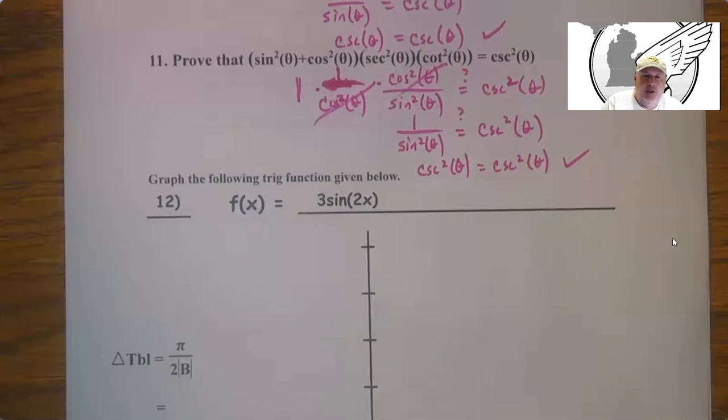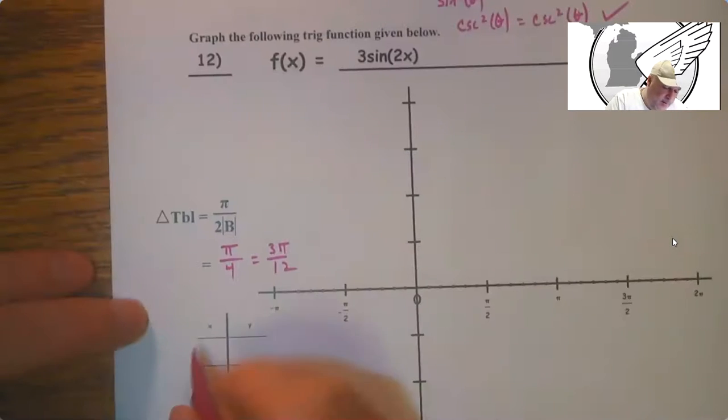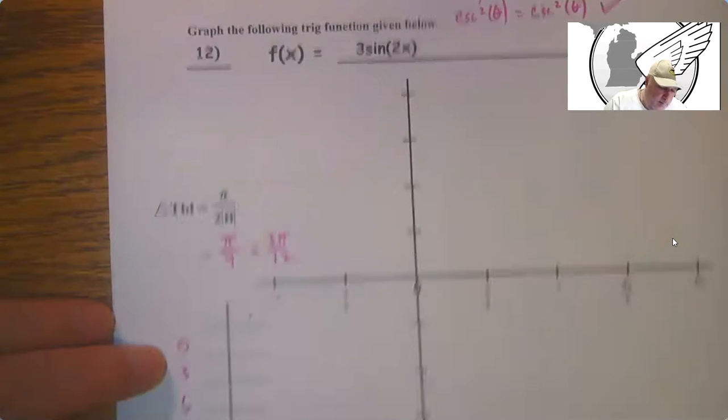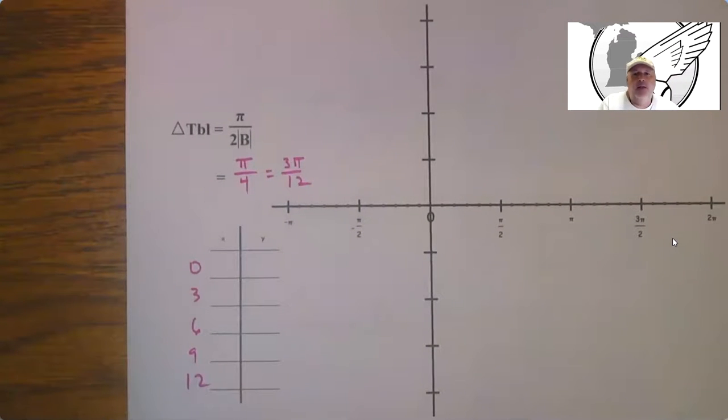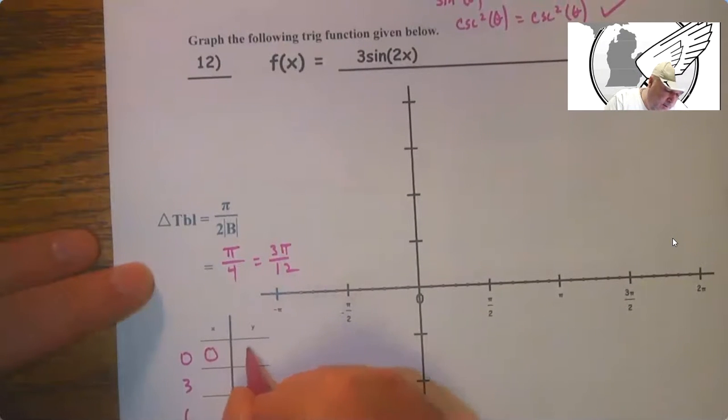So again, you need to determine this delta table here. So the B is 2. So this is going to be π over 4, which is 3π over 12 again. So every little scale of 3 marks. So 0 is going to give 0.